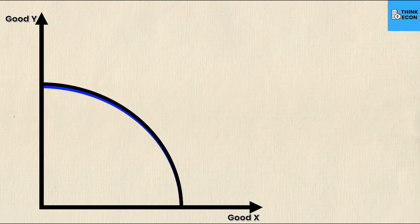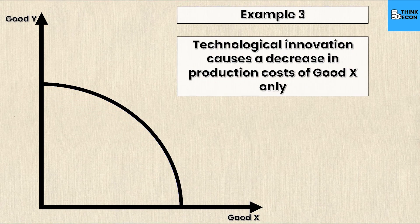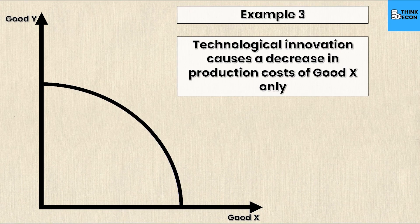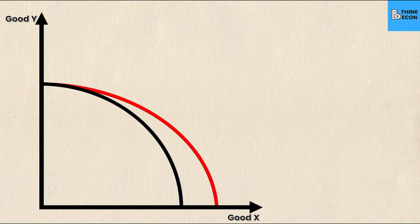Example three: technological innovation causes a decrease in production costs of good X only. Only the x-intercept will be impacted; the y-intercept is unaffected. Technological innovation decreasing production costs means I can produce more of good X, so the x-intercept moves to the right. Good Y has not been impacted because the question specified the shock only benefited the production of good X.